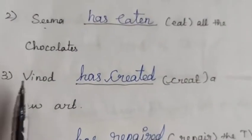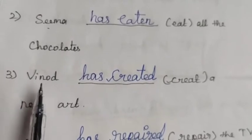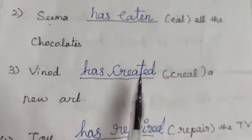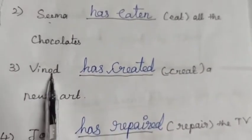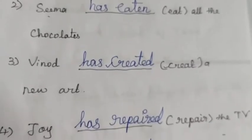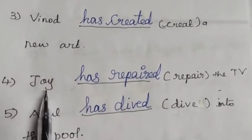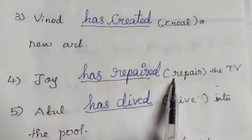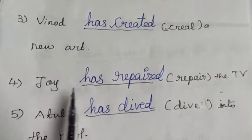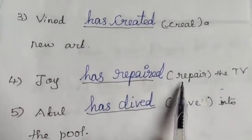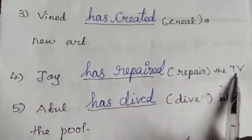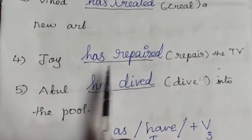Third: 'Vinod has created a new art' — Vinod is a singular subject, so 'has', and verb 3 of create is 'created'. Fourth: 'Joy has repaired the TV' — Joy is singular, so 'has', and verb 3 of repair is 'repaired'.